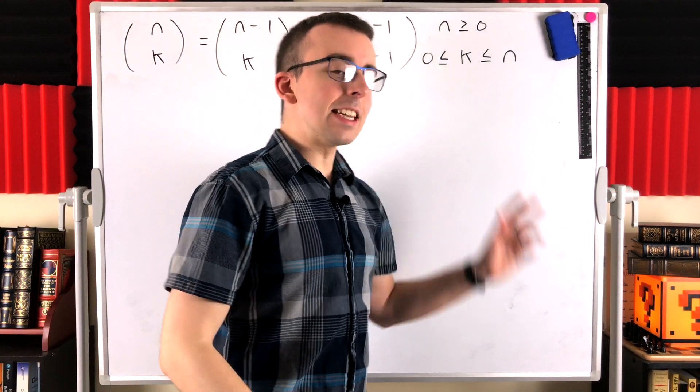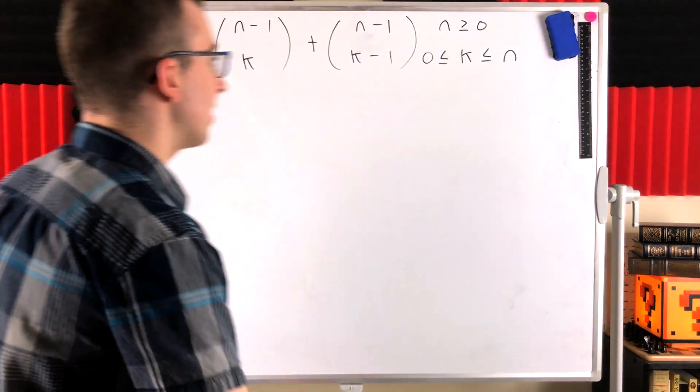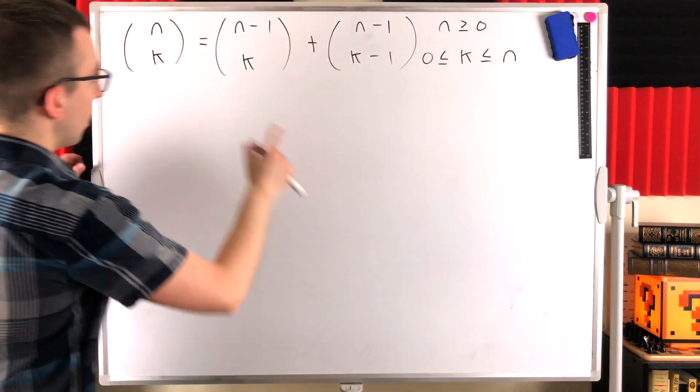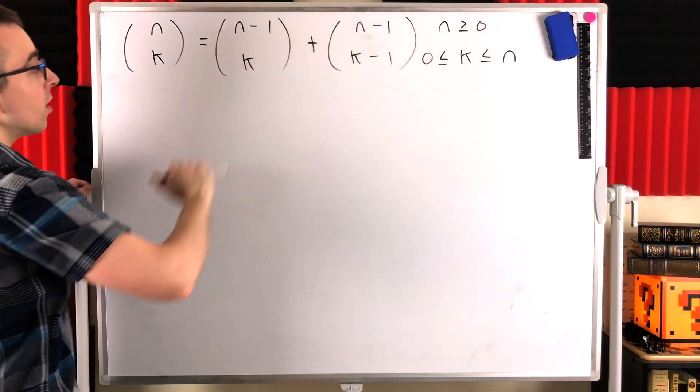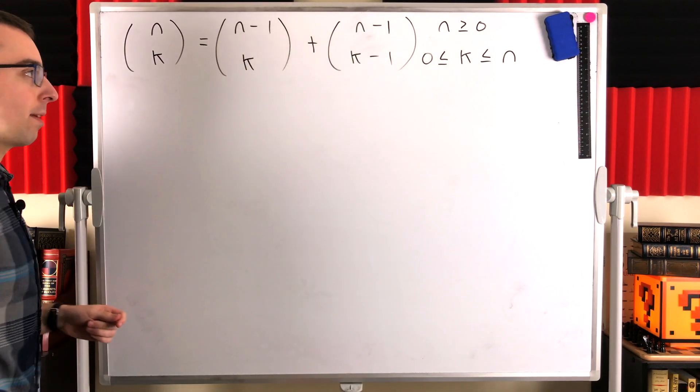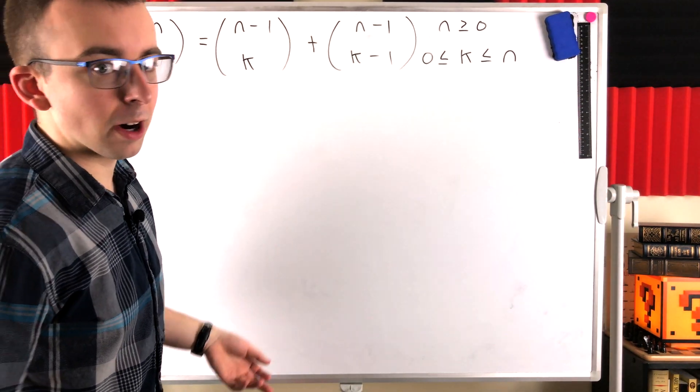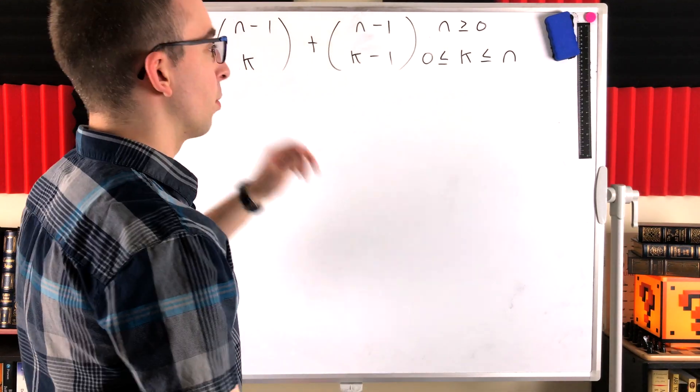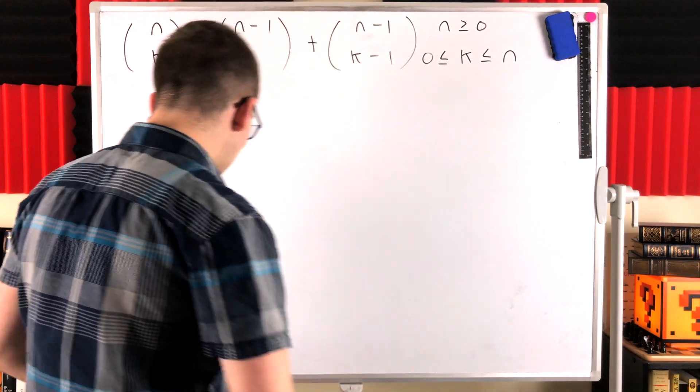In the case that k equals n, we can still say that this identity holds, because we'll have n choose n, which is 1, is equal to n minus 1 choose n, there's 0 ways to select n objects from n minus 1 objects, so that would be 0. And then this would be n minus 1 choose n minus 1, which is 1, so we'd have 1 equals 1, everything would be dandy.